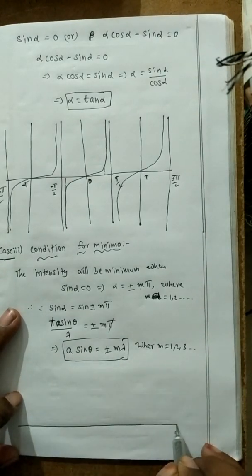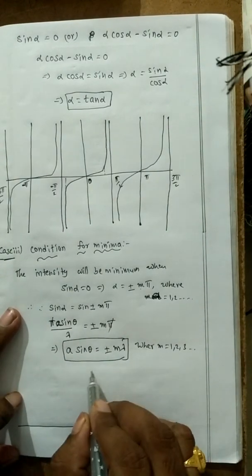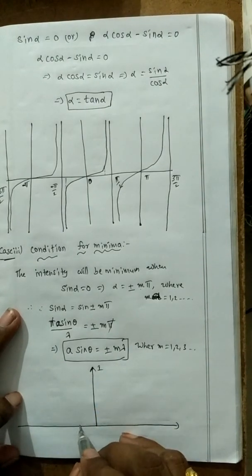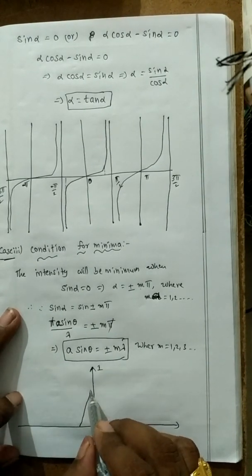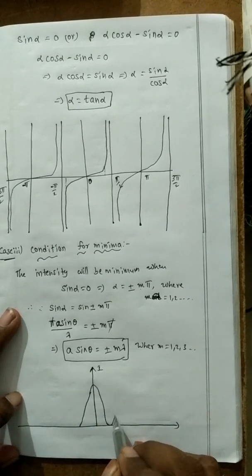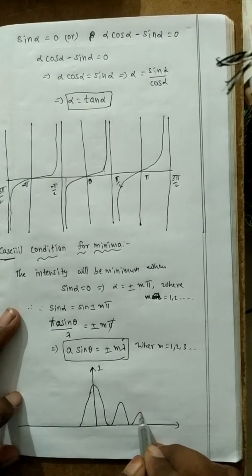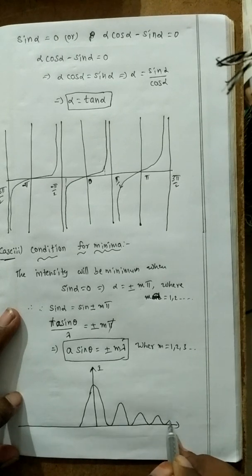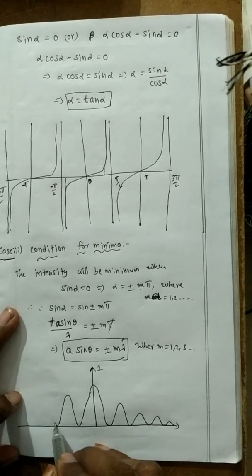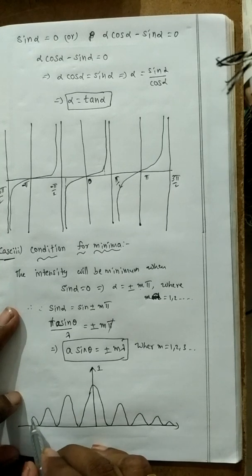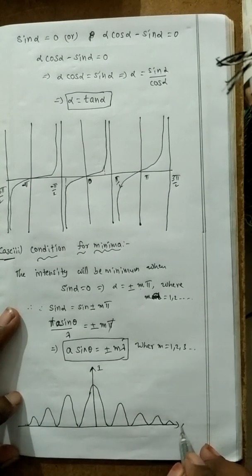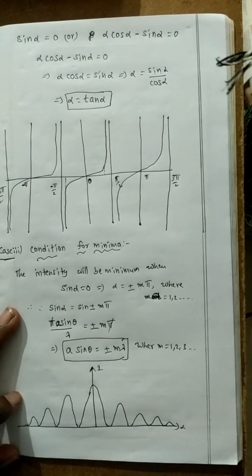The diffraction intensity distribution curve shows maximum intensity at the center. On both the left and right sides from the center, the intensity decreases. This is the intensity distribution curve for single-slit diffraction.